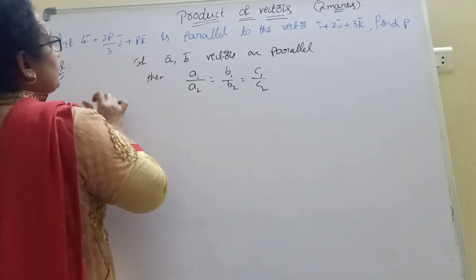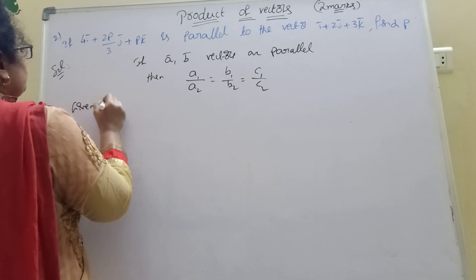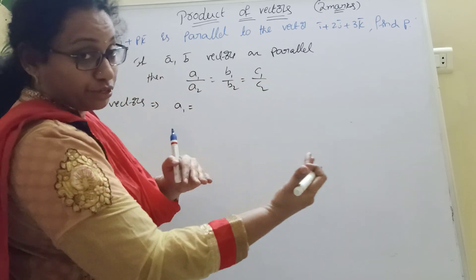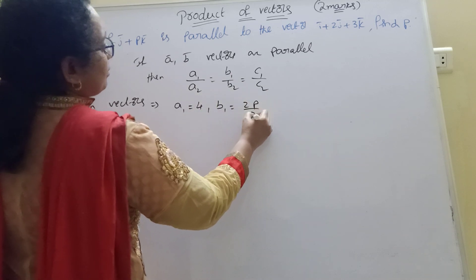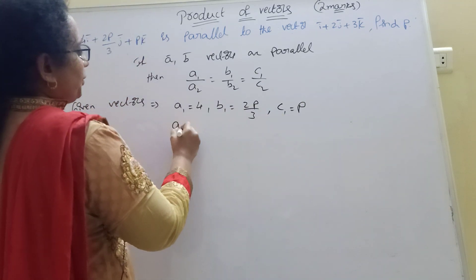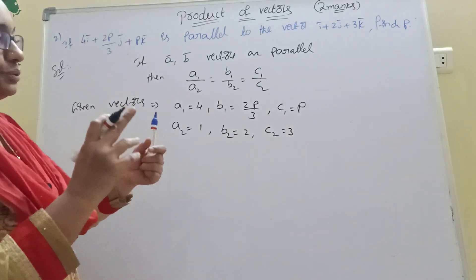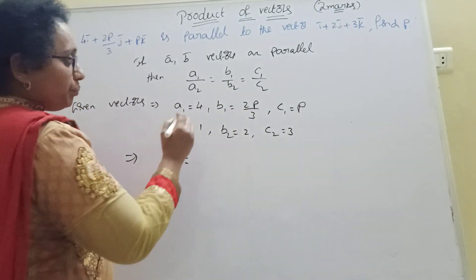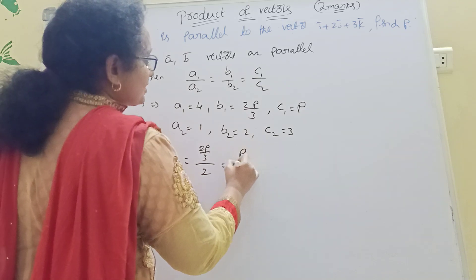Taking the problem, identify the coefficients. For the first vector, A1 is 4, B1 is 2P by 3, C1 is P. For the second vector, A2 is 1, B2 is 2, C2 is 3. Now applying the parallel condition: 4 divided by 1 equal to (2P by 3) divided by 2 equal to P divided by 3.